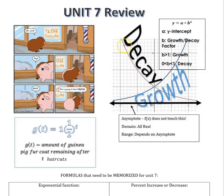We have our decay function, which falls from left to right, and that's when our B value is between 0 and 1 — something like 1/2. Exponential functions all have an asymptote based on any shifting up and down. In our basic exponential function, the asymptote is just the x-axis, y equals 0. The domain of every exponential function is all reals, and the range depends on that asymptote — in each of these cases, the range would be from 0 to infinity, not including 0.